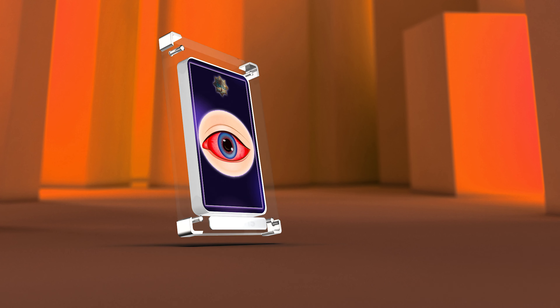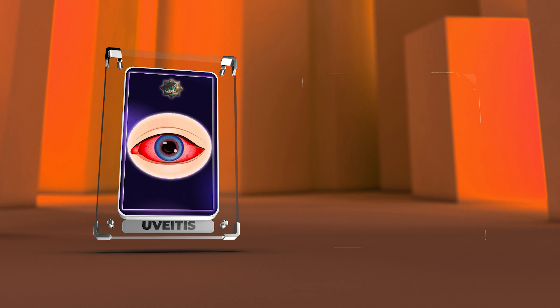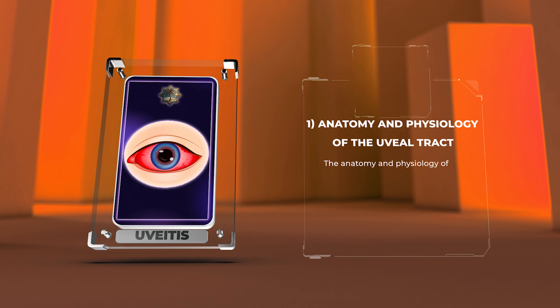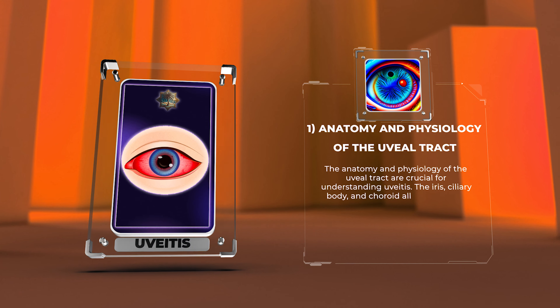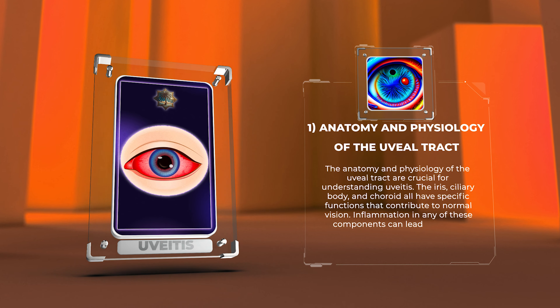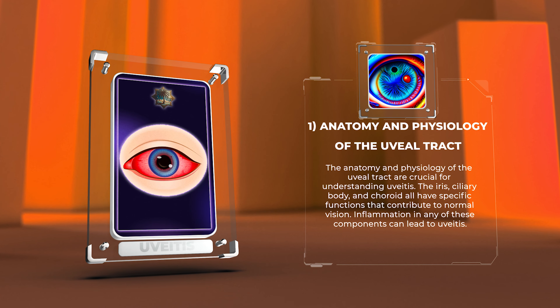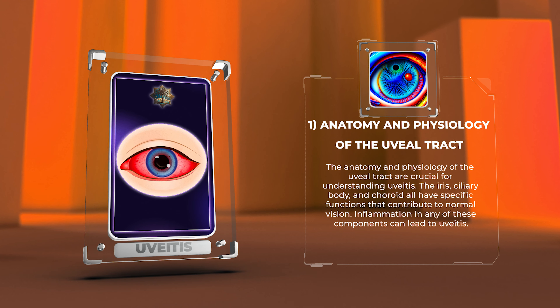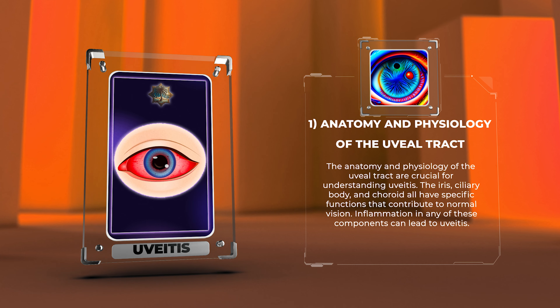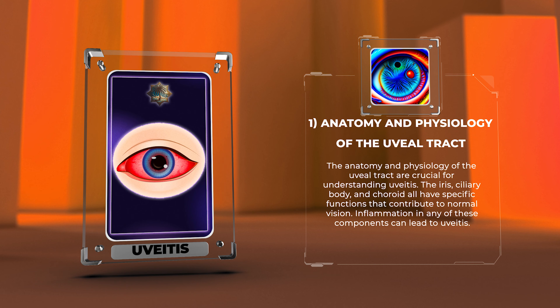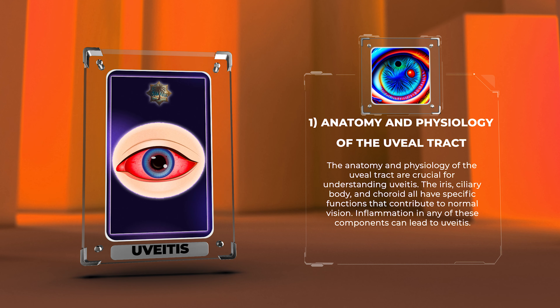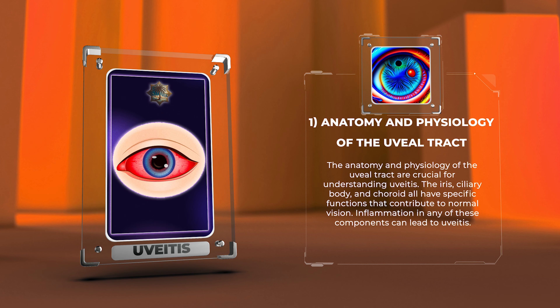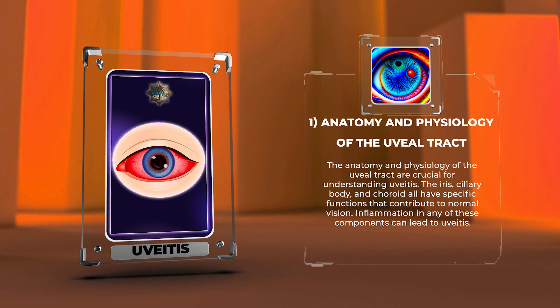The anatomy and physiology of the uveal tract are crucial for understanding uveitis. The iris, ciliary body, and choroid all have specific functions that contribute to normal vision. Inflammation in any of these components can lead to uveitis.